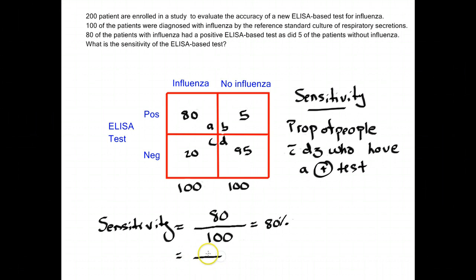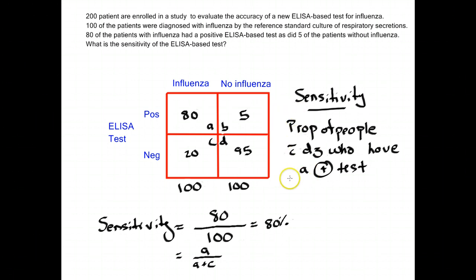If you like to memorize formulas, everybody with disease is this column, so we add up these two boxes: A plus C. We want to figure out what percentage of A plus C had a positive test, which is just box A. So A over A plus C is our sensitivity. Again, I think it's much better to think about this conceptually as the proportion of people with disease who have a positive test, rather than trying to memorize formulas.